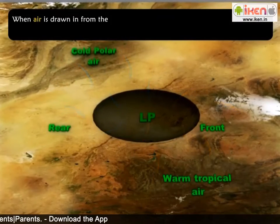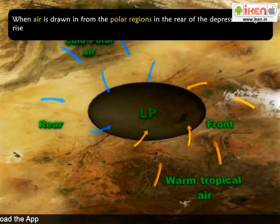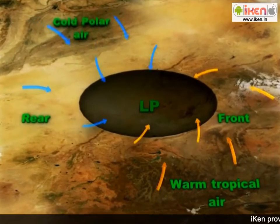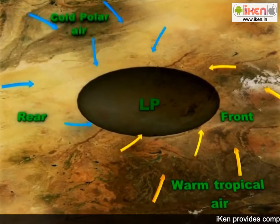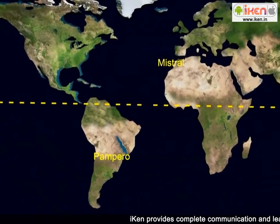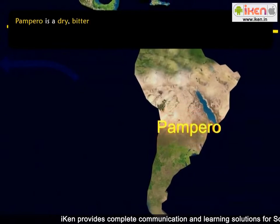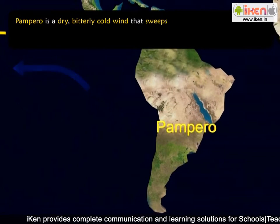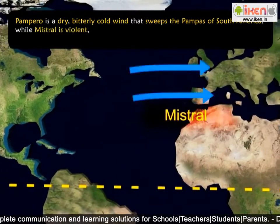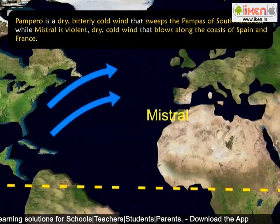When air is drawn in from the polar regions in the rear of the depression, it gives rise to cold depression winds. These winds are very strong, gusty and bitterly cold. Mistral and Pampero are two examples of cold winds. Pampero is a dry, bitterly cold wind that sweeps the pampas of South America, while Mistral is a violent, dry, cold wind that blows along the coasts of Spain and France.